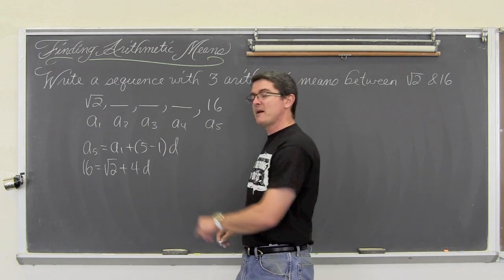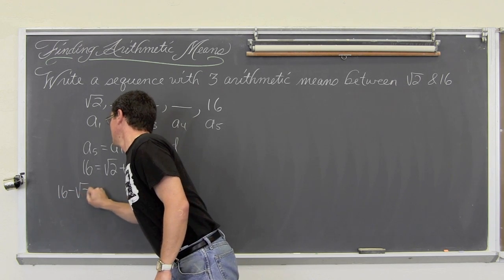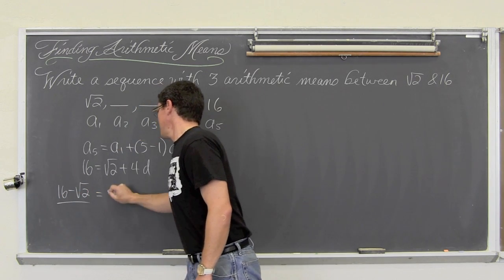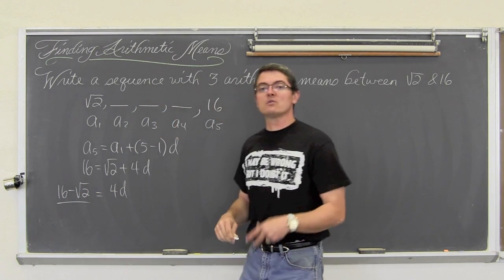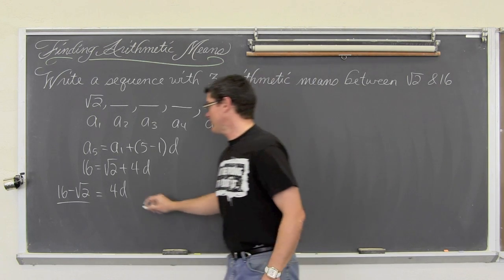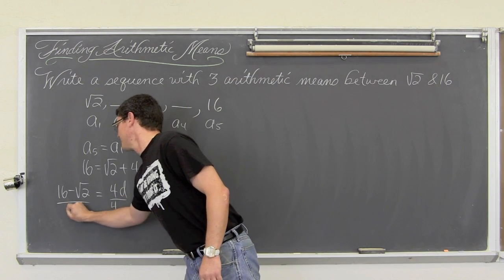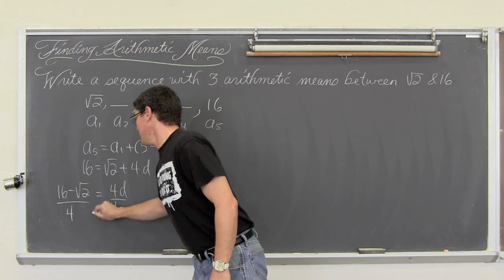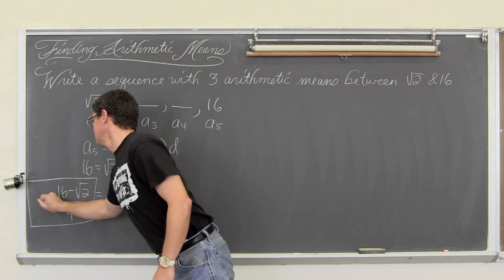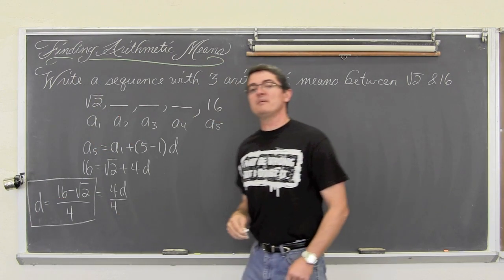Subtract both sides by square root of 2, 16 minus square root of 2 is equal to 4d. We are trying to solve for d, so we are going to divide both sides by 4. And there is our common difference: 16 minus square root of 2 over 4.